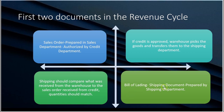If everything matches up, the shipping department prepares the next document in the cycle: the bill of lading. The bill of lading is prepared by the shipping department — note that it is not prepared by the billings department. However, the billings department does need a copy of the bill of lading, just as it needs a copy of the sales order form.